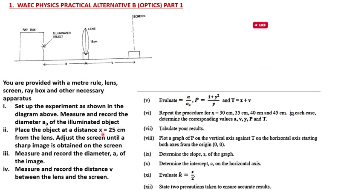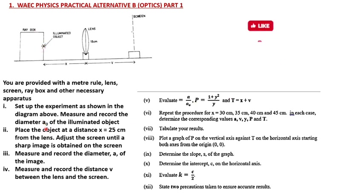The first reading is at 25 cm. A-naught, the diameter of the illuminated object, is measured only once and recorded at the top of your answer booklet. Then for each value of s — 25, 30, 35, 40, and 45 cm — you record x, A, v, y, p, and t in your composite table. Here y equals A over A-naught, p equals 1 plus y-squared divided by y, and t equals x plus v.